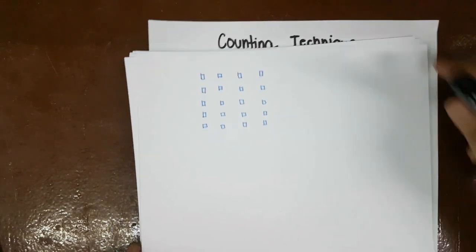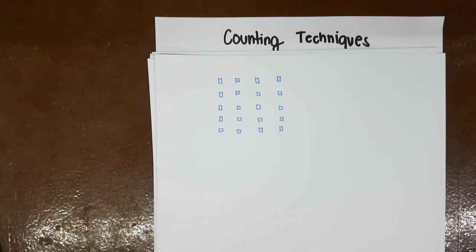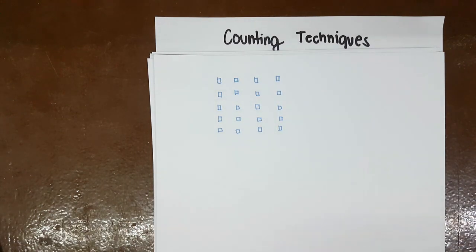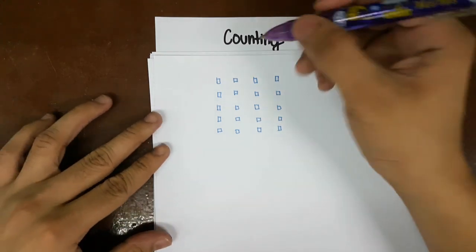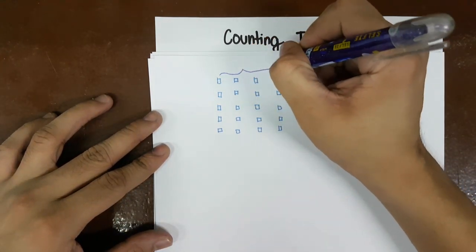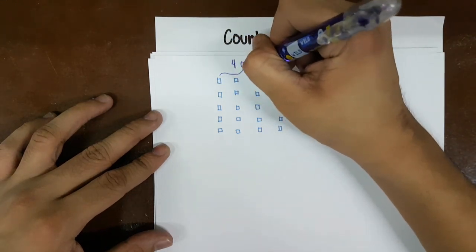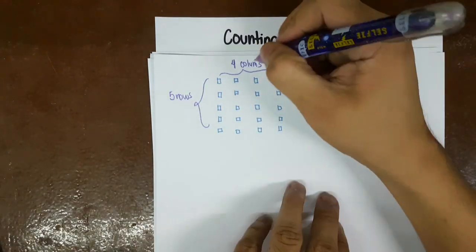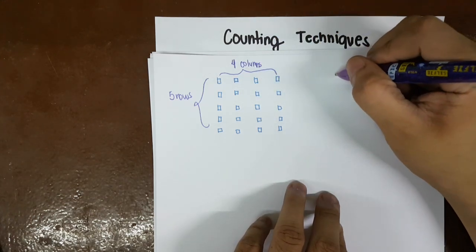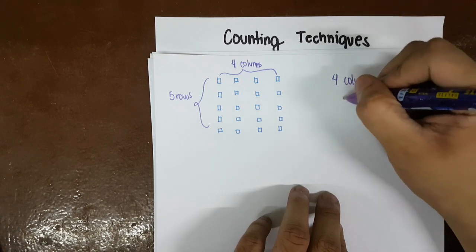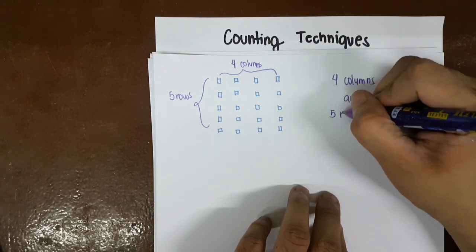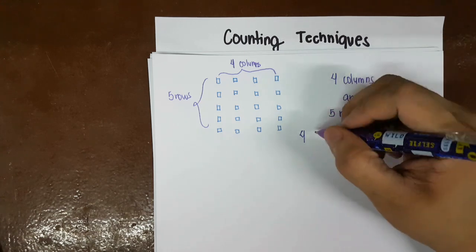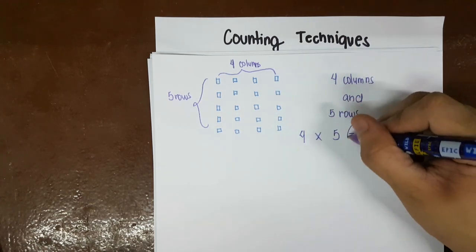Here is another example: you are asked how many squares are in this grid. You wouldn't count each one individually — instead, notice there are four columns and five rows. I mentioned 'and,' so you just multiply: four times five equals 20 squares.